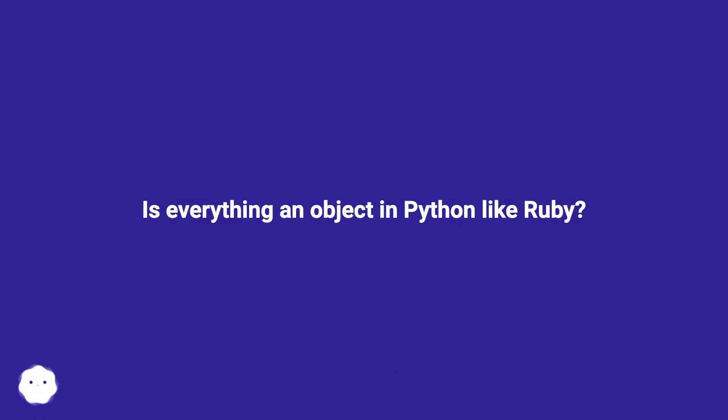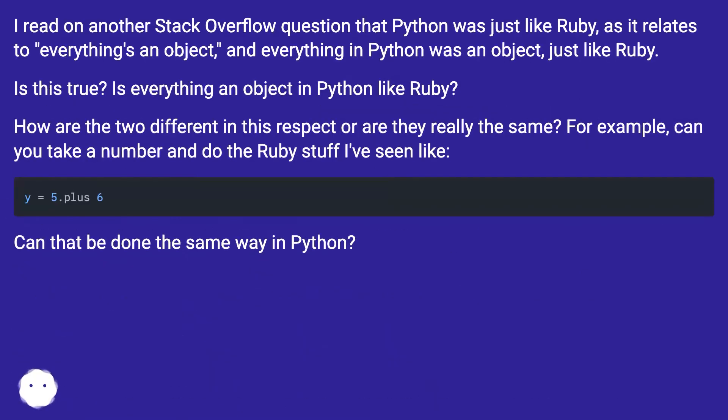Is everything an object in Python like Ruby? I read on another Stack Overflow question that Python was just like Ruby, as it relates to everything's an object, and everything in Python was an object, just like Ruby. Is this true? Is everything an object in Python like Ruby?